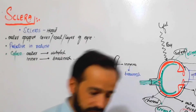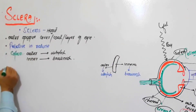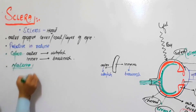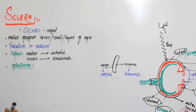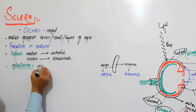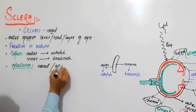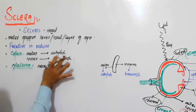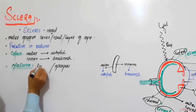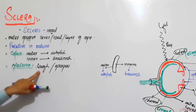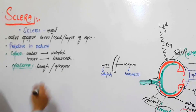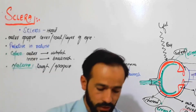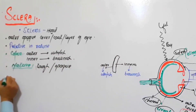What is the nature of the sclera? We said it is hard, so its nature is tough and opaque. It is tough in nature and opaque in nature — it does not let light pass through it.